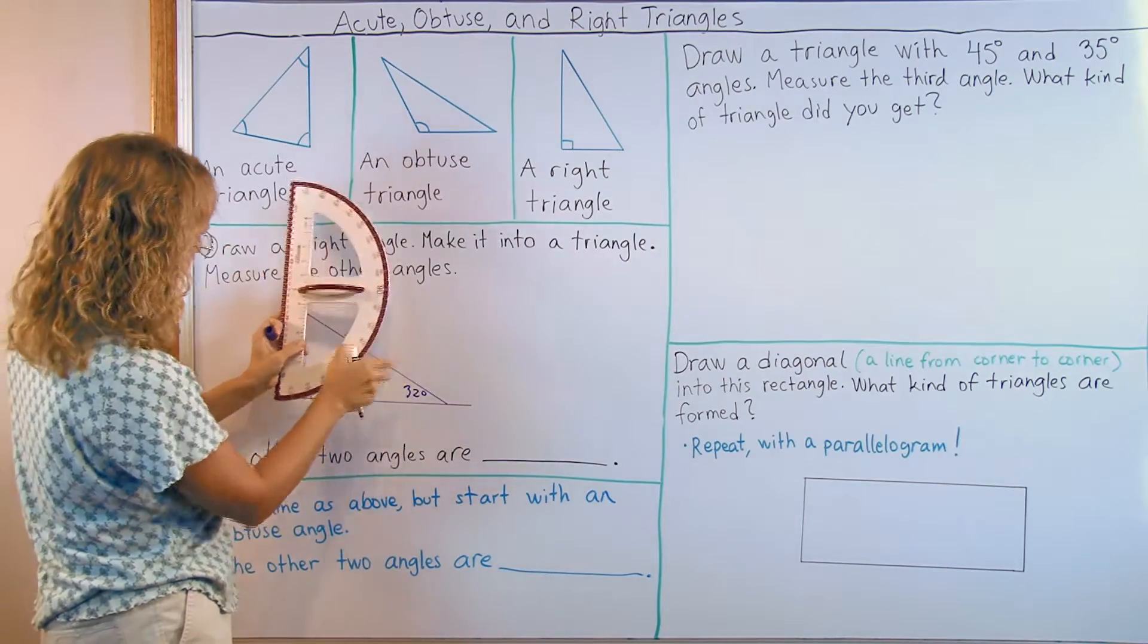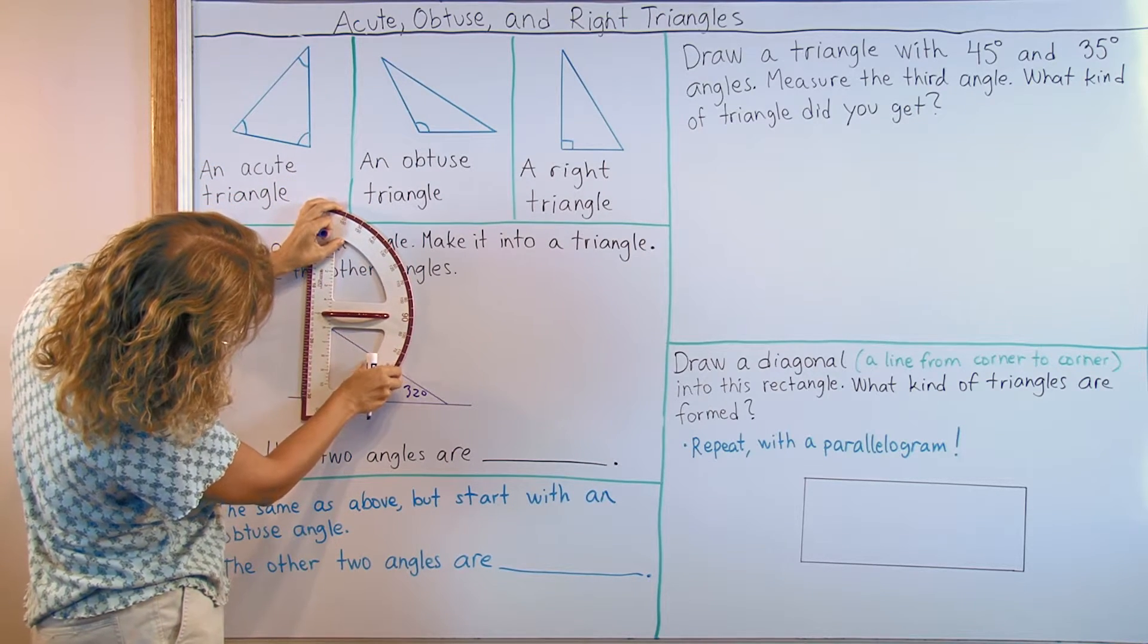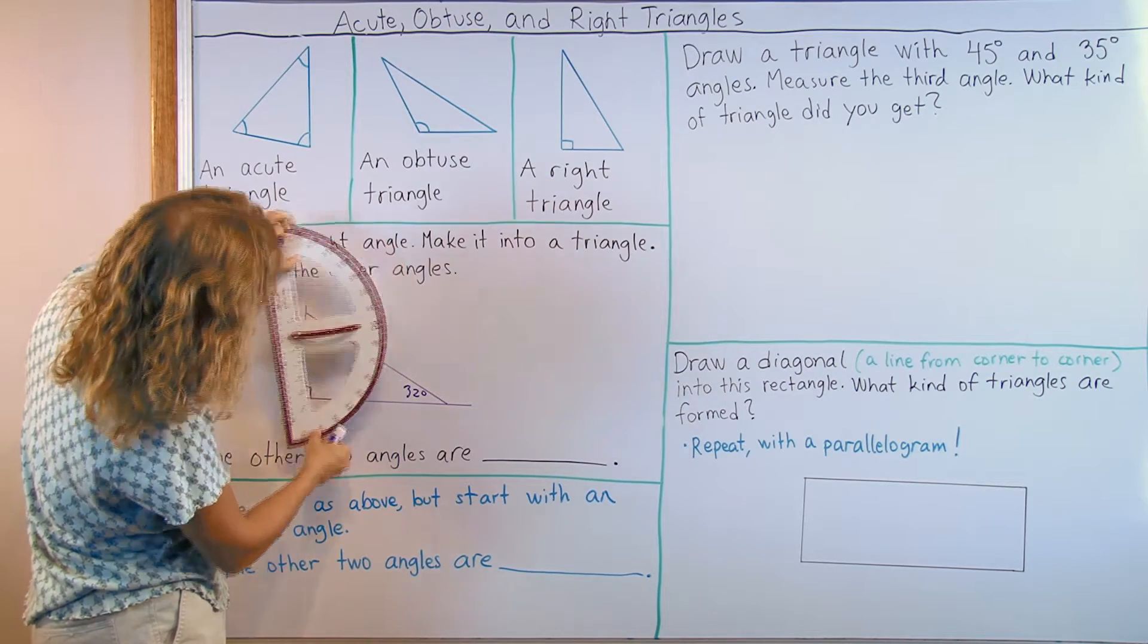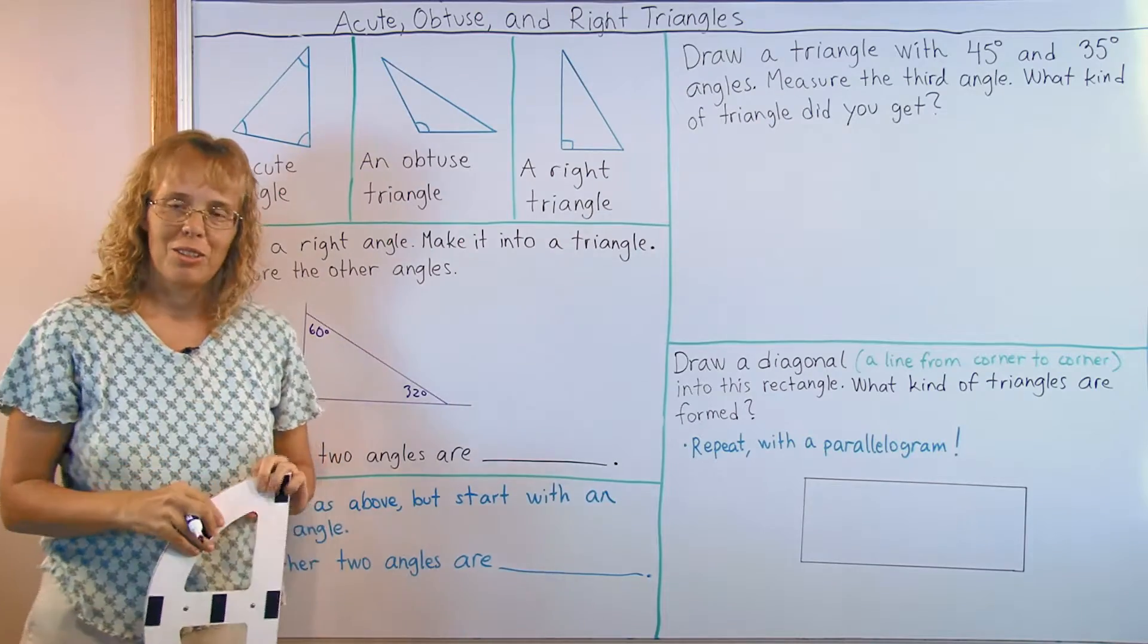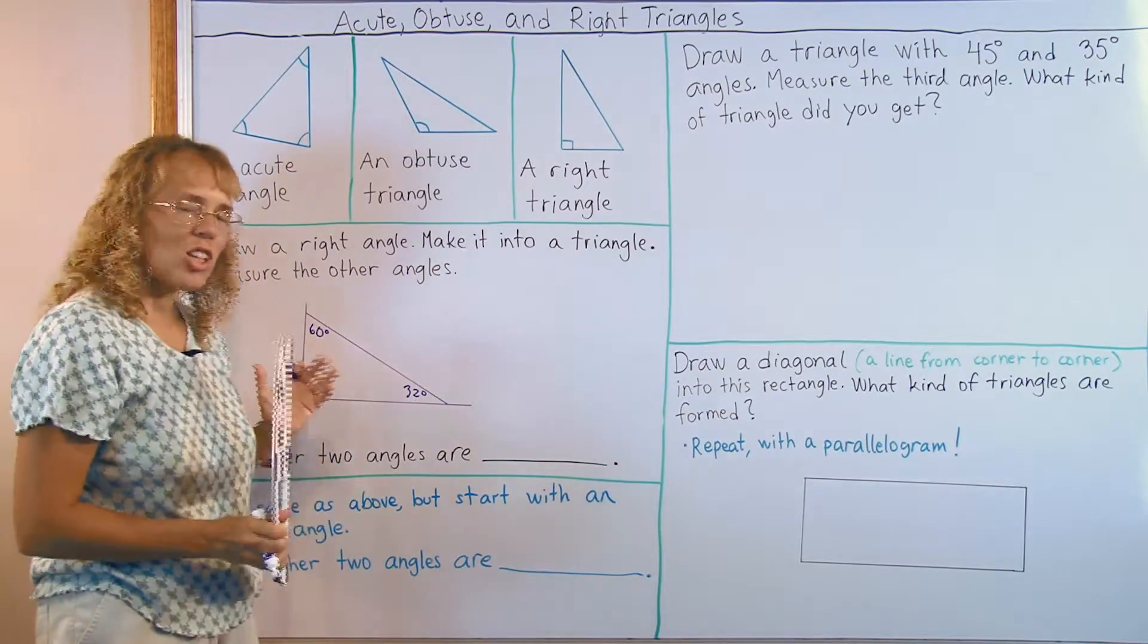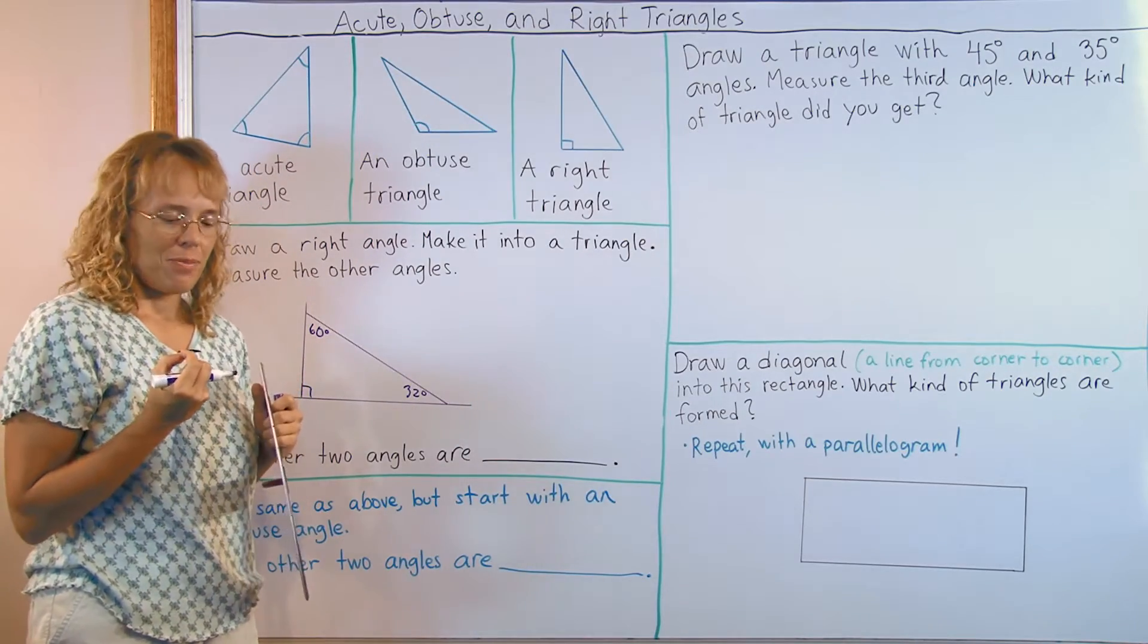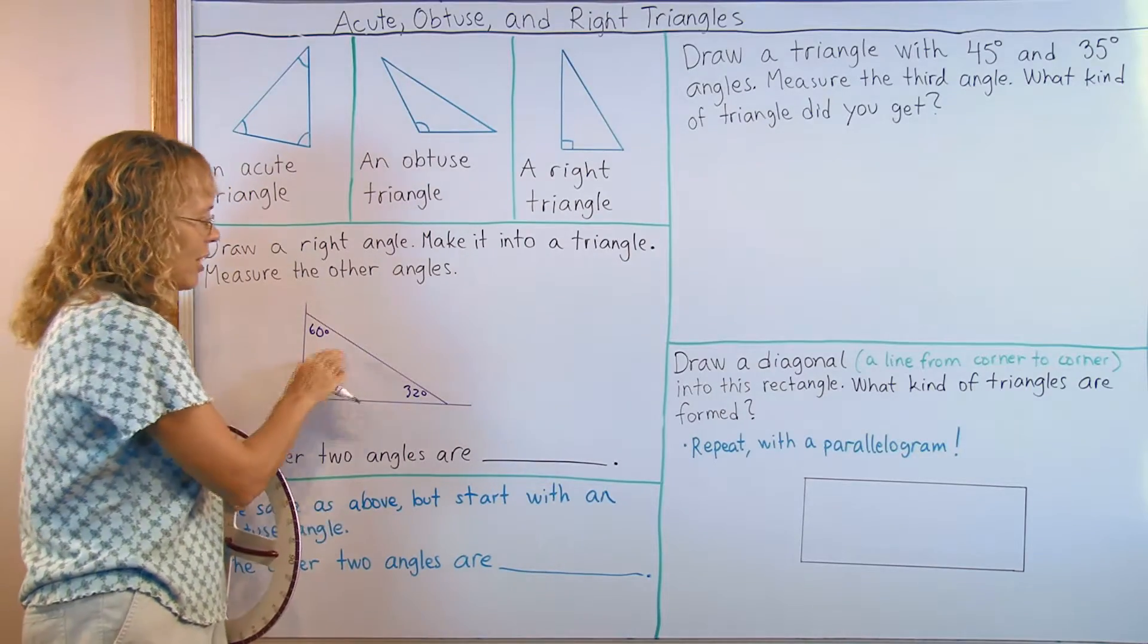And then over here, I got exactly 60 degrees. And that is quite normal that when you're drawing and measuring, it's so hard to measure and draw very accurately. Especially with my big marker pen. That this kind of thing is normal.